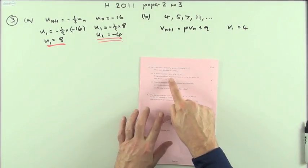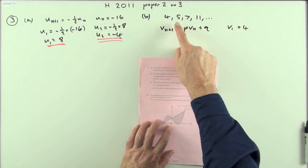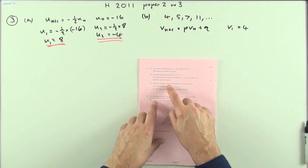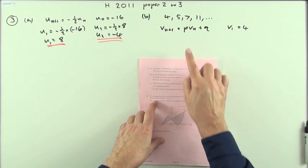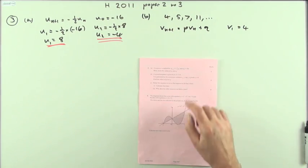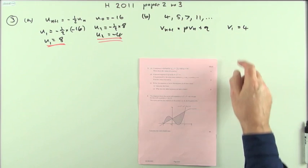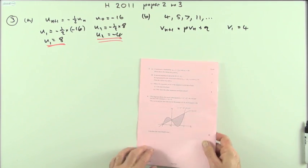And part B. A second sequence is given by 4, 5, 7, 11, and so on. Should only be three dots in an ellipsis. It's generated by this recurrence relation. This time it's got both parts to it, the multiplying factor and the added number. It tells you that V1 is 4. Find the values of P and Q.